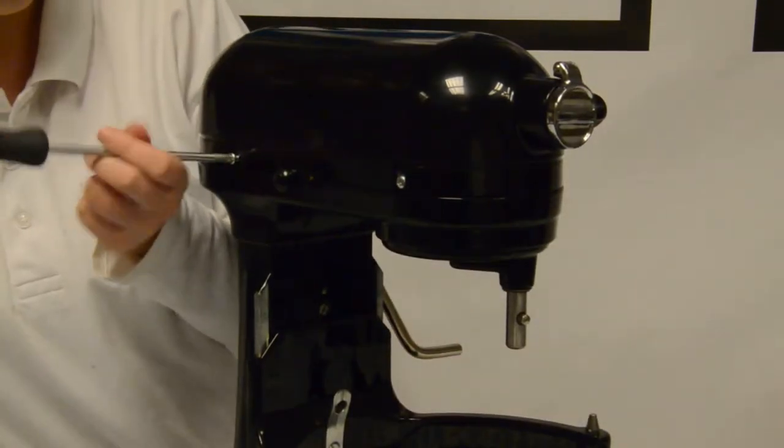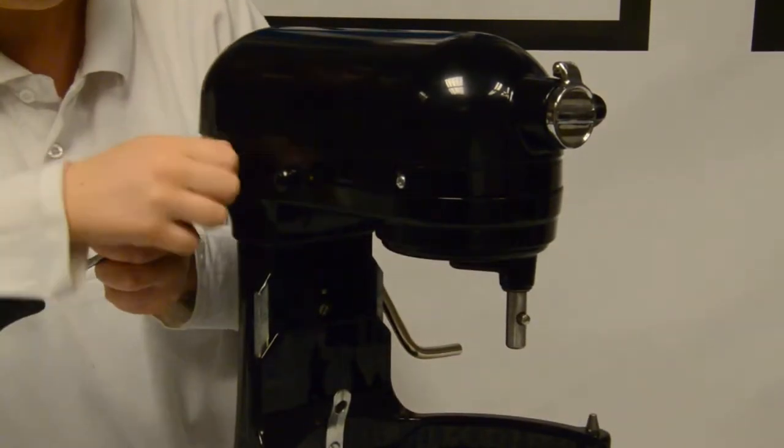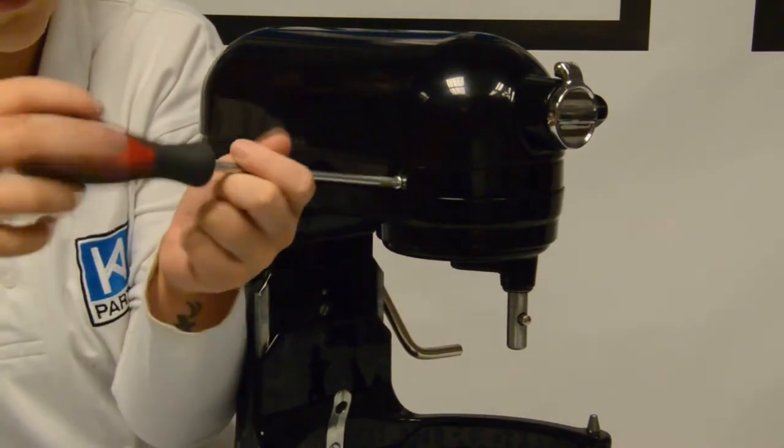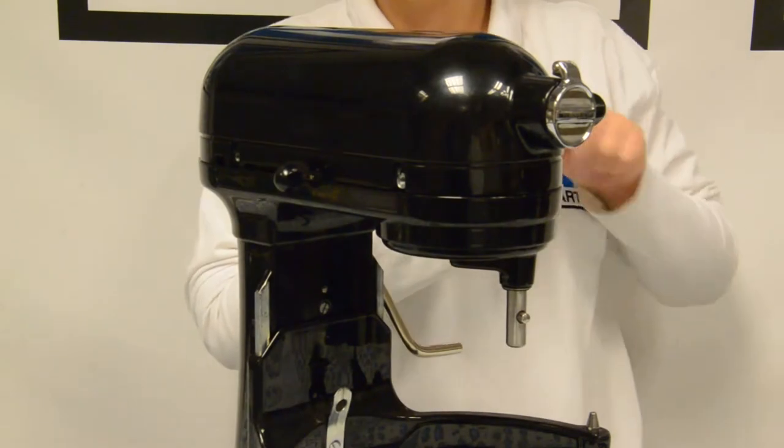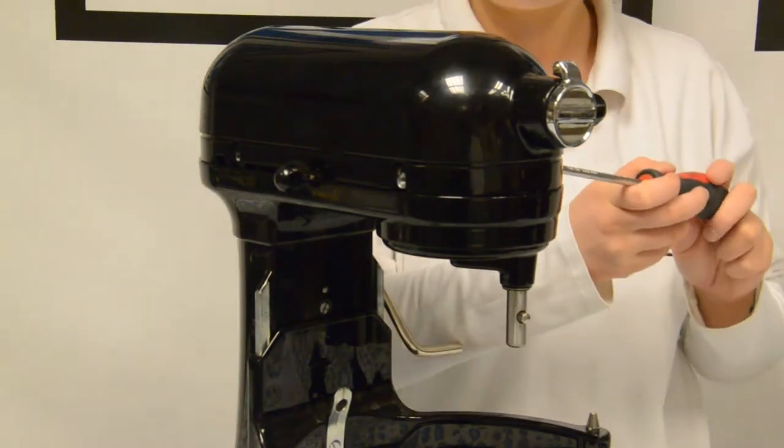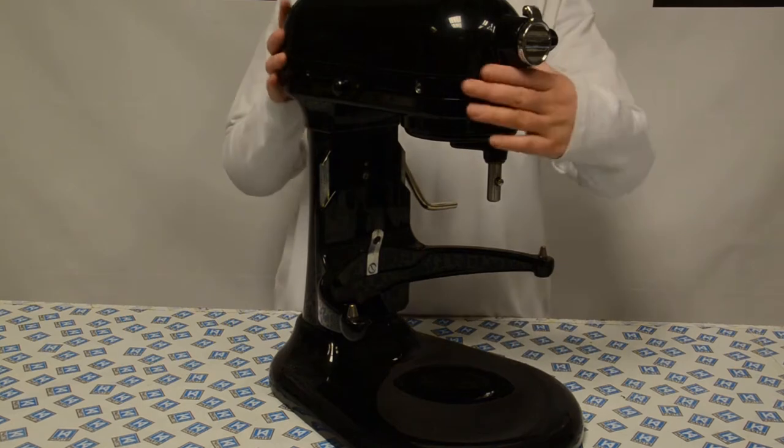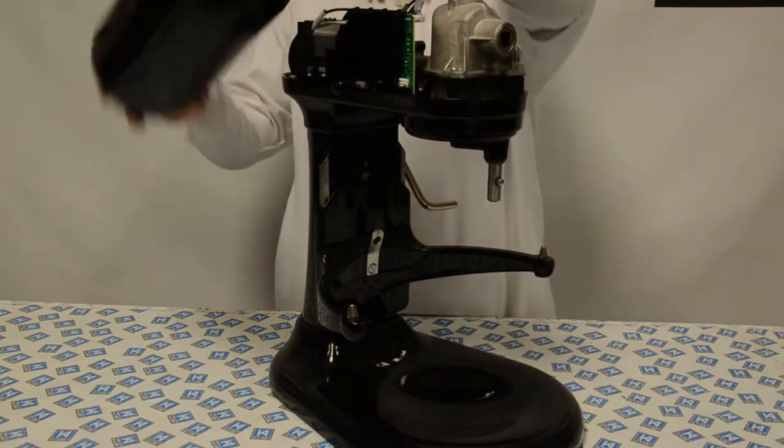There are two screws on each side of the mixer. Undo all four screws to allow the head to come off the mixer. Now put the head to one side.